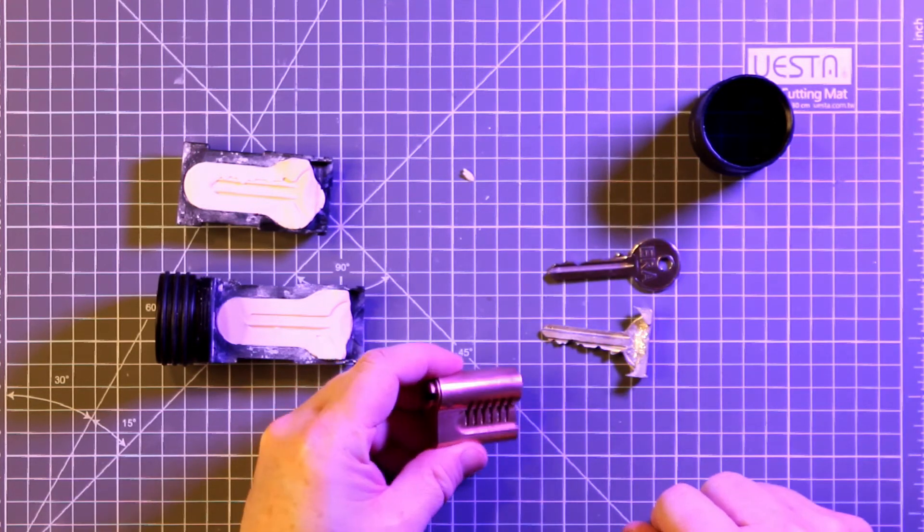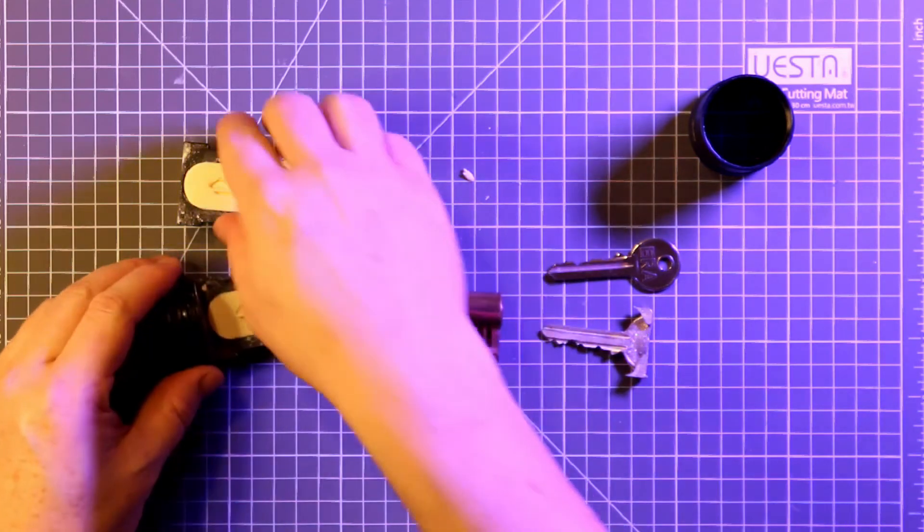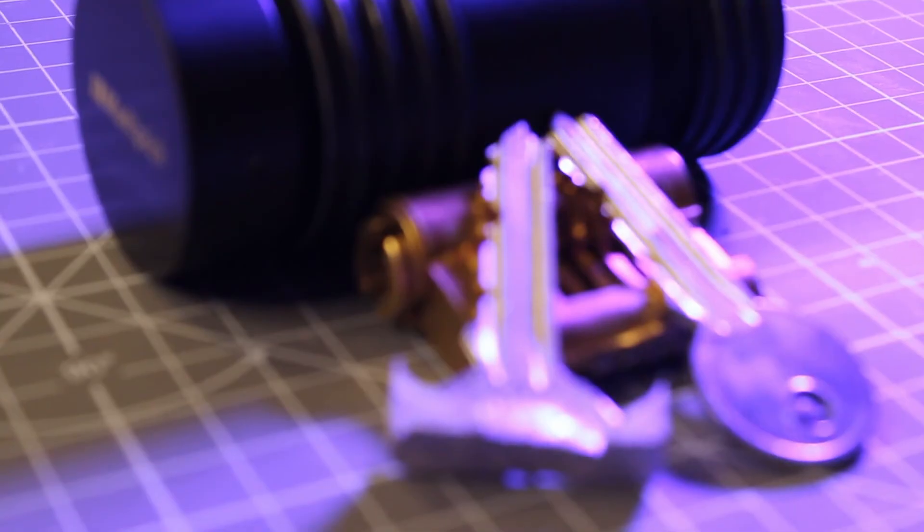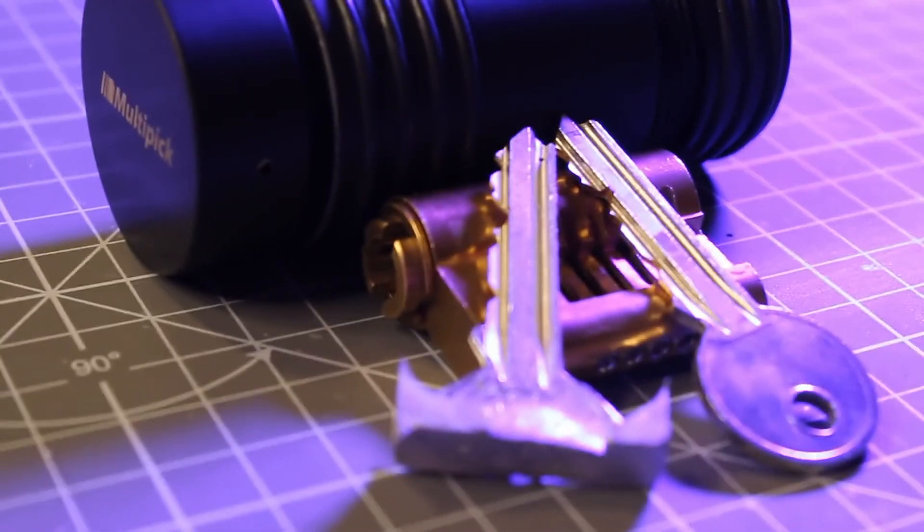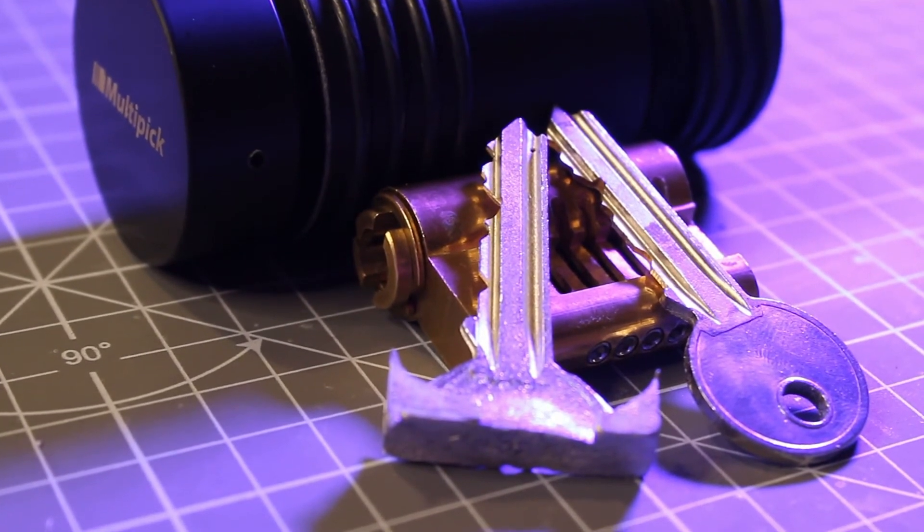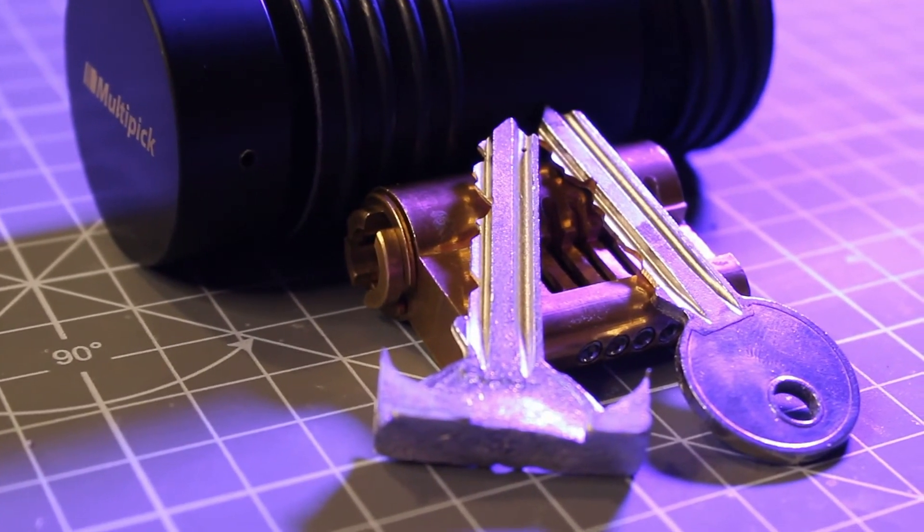So there you have it. That's how quickly you can copy a key in the field. The key isn't particularly strong so if you're going to be using this key a lot in the field I would recommend making a brass copy using the blank and a file or a commercial machine. But as you can see this is a perfect copy of the key.